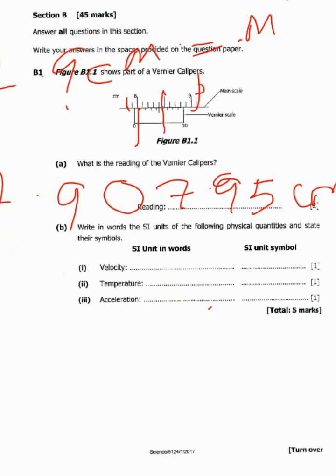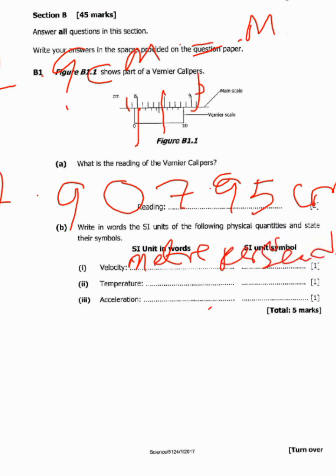Let's come to our next question. It says: write in words the SI units of the following physical quantities and state their symbols. For velocity, written in words the unit is meters per second. The symbol for meters per second is m/s — that is the SI unit for velocity.